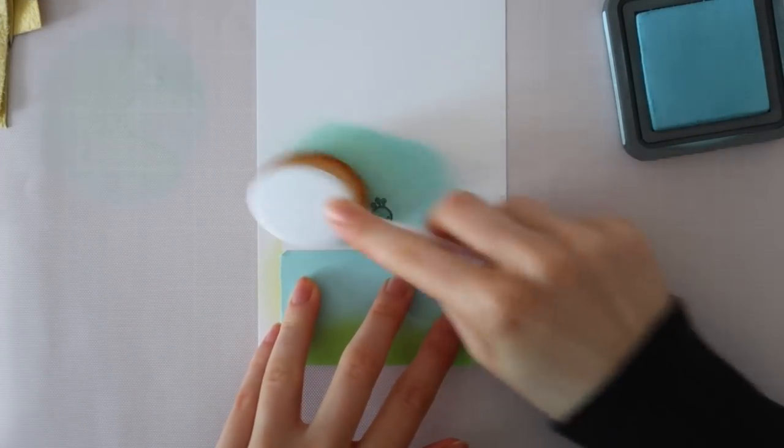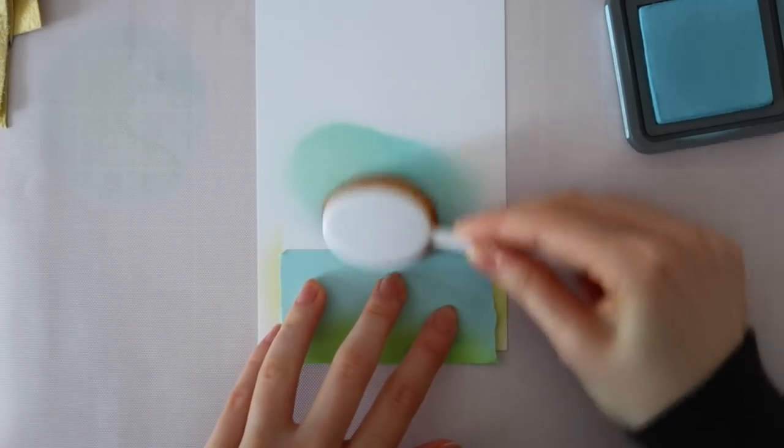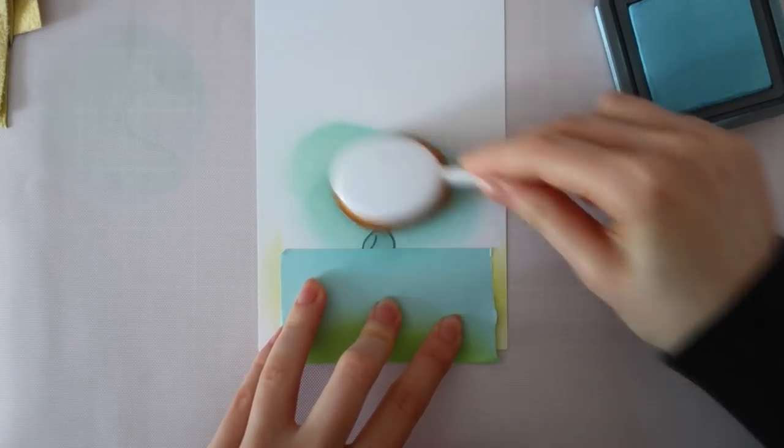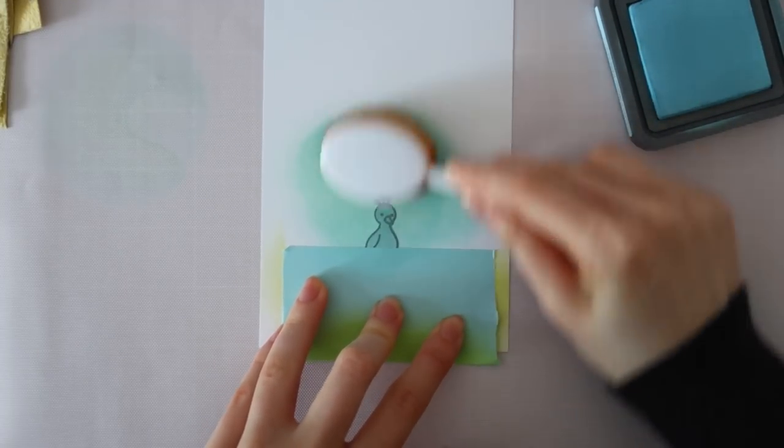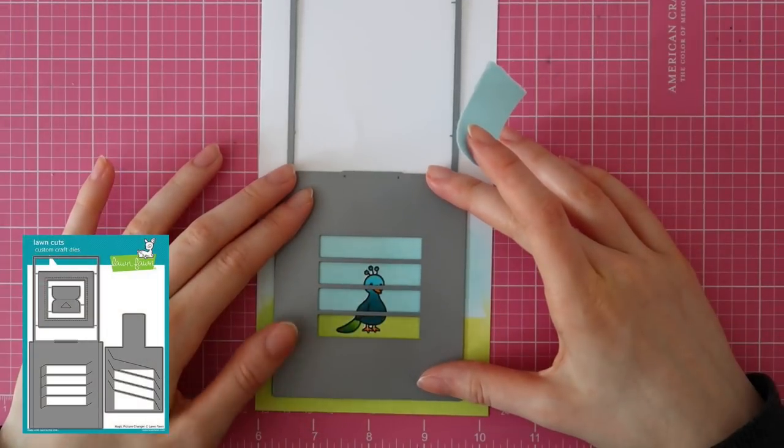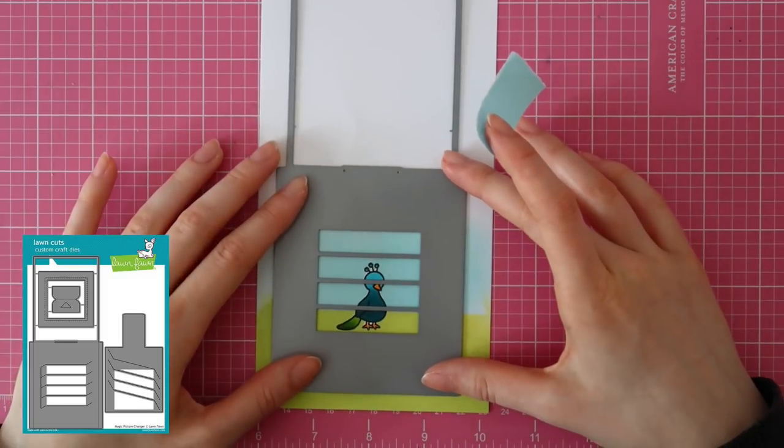I peeled off my mask and then it's time to ink blend the sky. Before switching over to the Tumbled Glass ink pad, I cleaned off my brush by rubbing it onto a chamois and then a Kleenex.